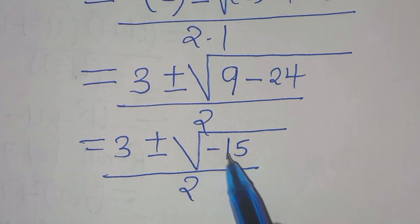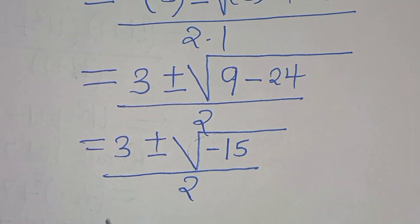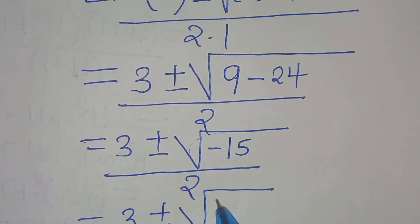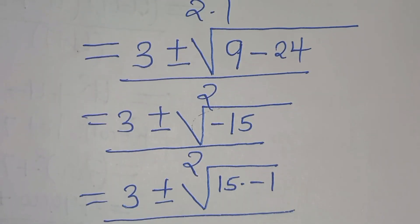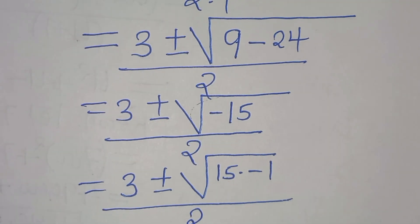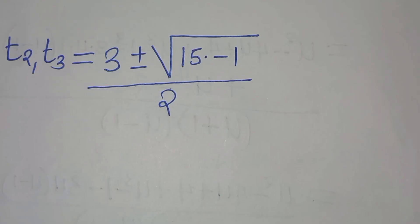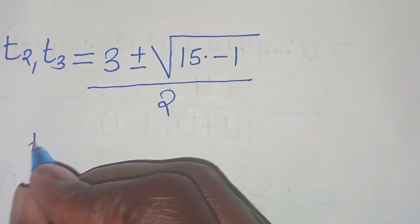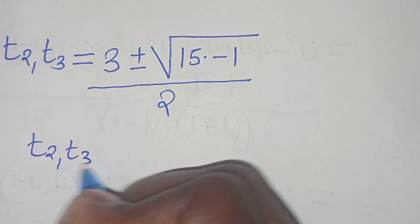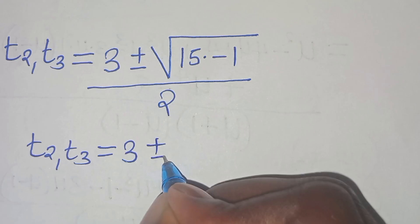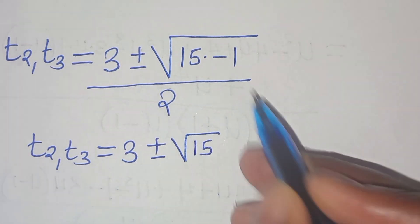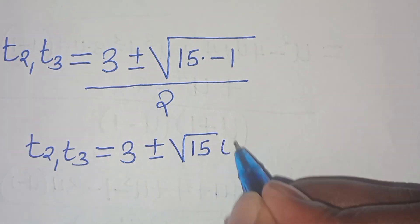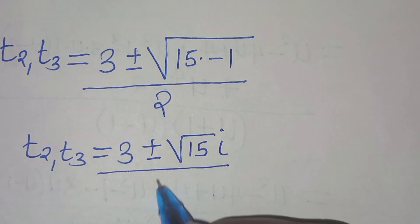We can express the square root of minus 15 as square root of 15 times the square root of minus 1, which equals square root of 15 times i. So t₂ and t₃ equal 3 plus or minus root 15 i, divided by 2.